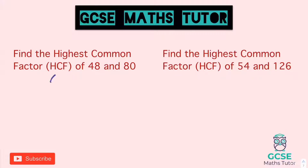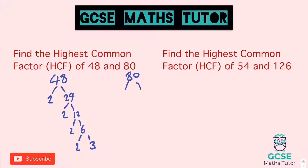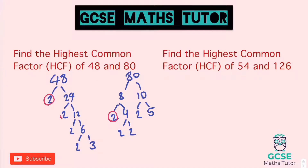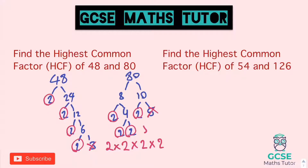Find the highest common factor of 48 and 80. For 48: two times 24, two times 12, two times six, and two times three. For 80: eight times ten, ten is two times five, eight is two times four, and four is two times two. Now identifying what's in both: they share a two, another two, another two, and another two — four 2s. They don't share a three or a five. So 2 × 2 × 2 × 2 = 16. Our highest common factor is 16.